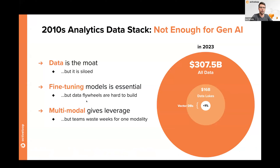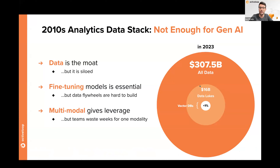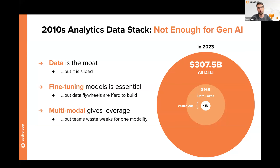The current modern data analysis stack, built roughly in the 2010s for big data analytics, is really not appropriate for generative AI. Data is the moat for many companies — there's a huge amount of data sitting on file systems and cloud storage not being used. A small subset has been put into data lakes, and an even smaller subset is being used in vector databases for generative AI use cases. We want to enable all this data to be accessible by LLMs so they can provide valuable insights. Fine-tuning models is also essential — as applications get productionized, this will become increasingly important.